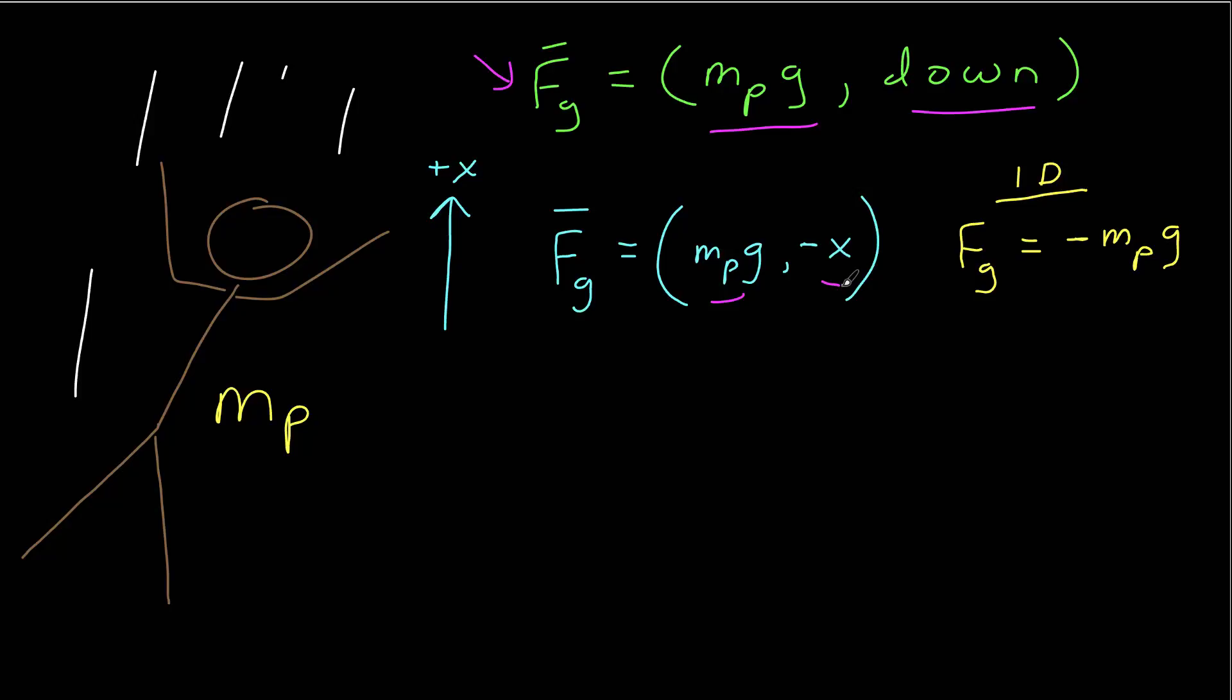since it always points down. In one dimension, given our simplified vector notation, I would write that as f sub g equals negative mass of the object times g, where the negative indicates the direction of the force in one dimension.